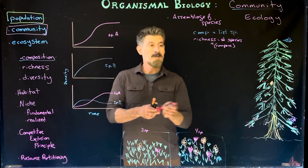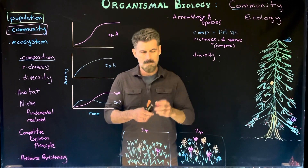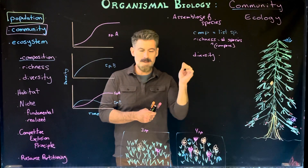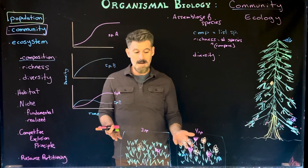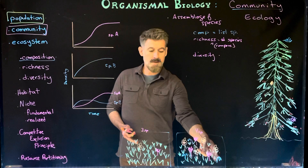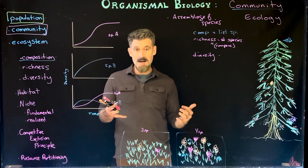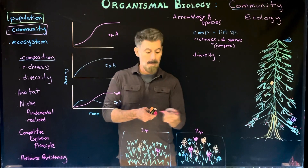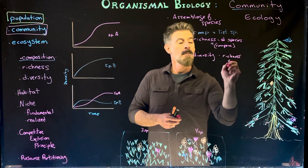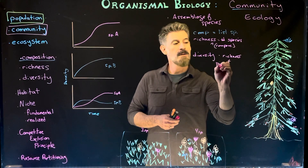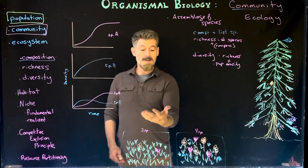Beyond richness we also have species diversity. Composition is just a list of the organism names in that area. Richness is the count of species. Diversity is where we have the richness plus we're considering the population density — the number of individuals — of each of the species.